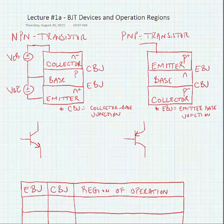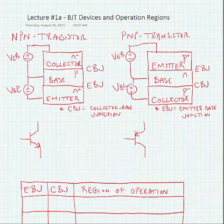On the PNP, we have the opposite. We have a V emitter to base voltage source, and we have a V base to collector voltage source.